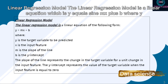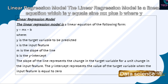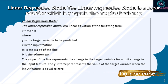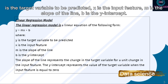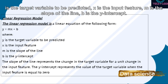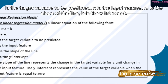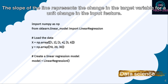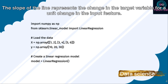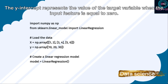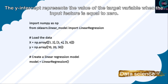The linear regression model is a linear equation: y = mx + b, where y is the target variable to be predicted, x is the input feature, m is the slope of the line, and b is the y-intercept. The slope represents the change in the target variable for a unit change in the input feature. The y-intercept represents the value of the target variable when the input feature is equal to zero.